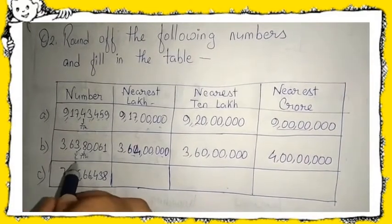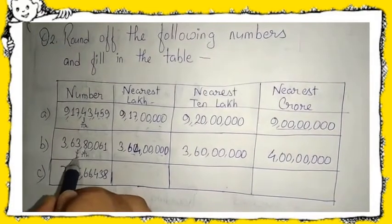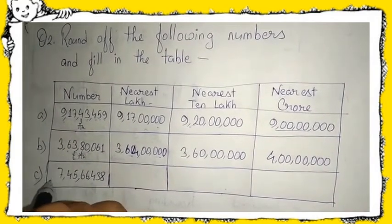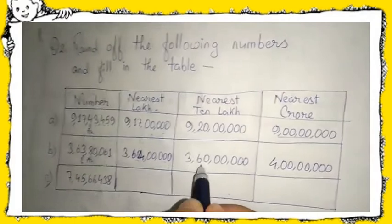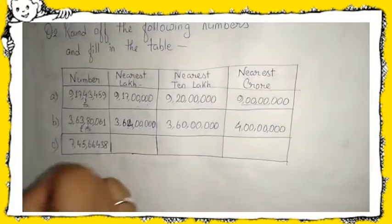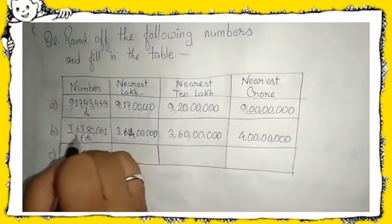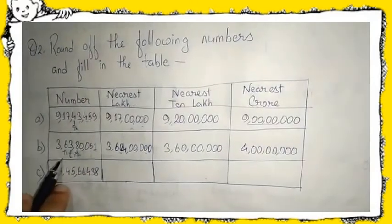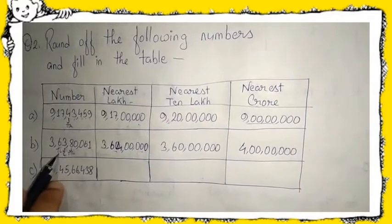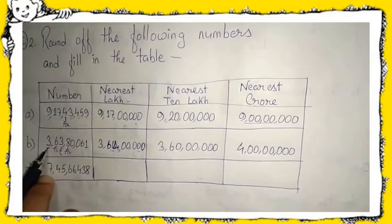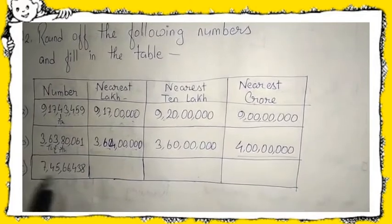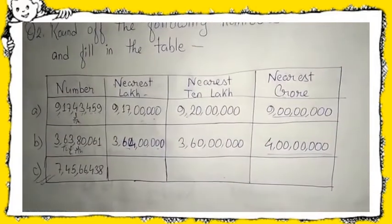For nearest ten lakh, look at the lakh place — it is three, which is less than five, so you cannot add one, giving three crore sixty lakh. For nearest crore, look at the ten lakh place — six is there, which is more than five, so you add one to three, giving four crore. Part C is your homework — try to do it.